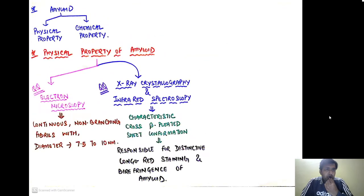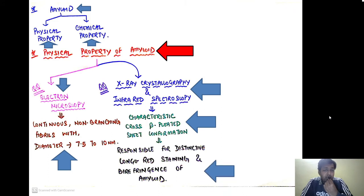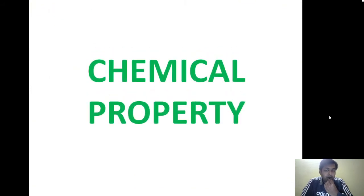Regarding the physical property of amyloid: under electron microscopy, amyloid appears as continuous non-branching fibrils with a diameter of 7.5 to 10 nanometers — an important exam point. Under X-ray crystallography and infrared spectroscopy, the characteristic cross beta-pleated sheet conformation can be seen. This basic beta-pleated sheet structure is responsible for the distinctive Congo red staining and birefringence of amyloid.